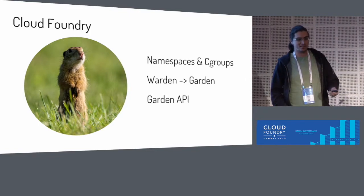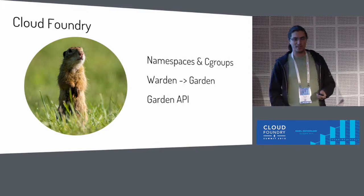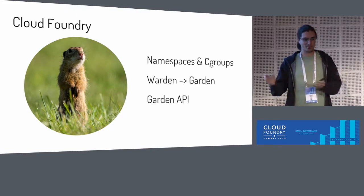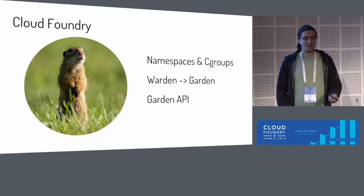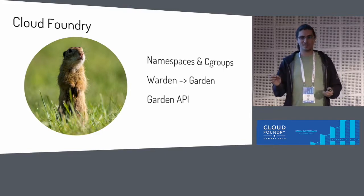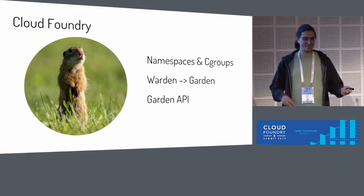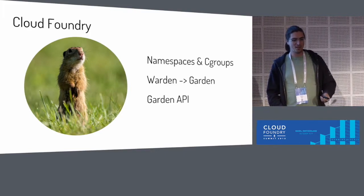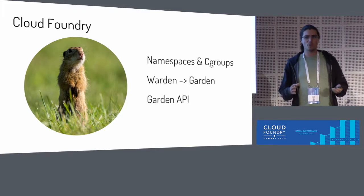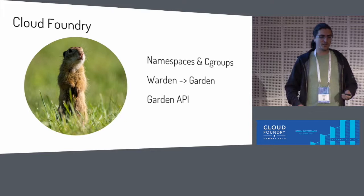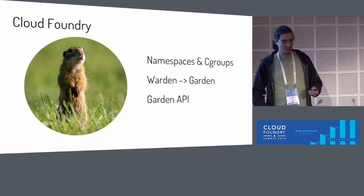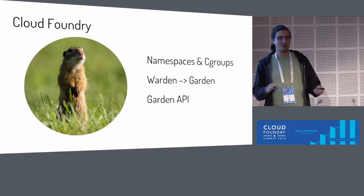Cloud Foundry loved that, so it created Project Warden — the great grandparent of Garden. Warden was a small Ruby project that orchestrated the low-level details, giving the platform the ability to run apps securely. Then we decided to rewrite Warden and created Garden — because any name that doesn't start with a G is not a valid name in the Golang land. But it was more than just swapping one letter; we extracted the Garden API, a small API describing the platform's needs, and then you could have swappable backends, swappable implementations of the API.